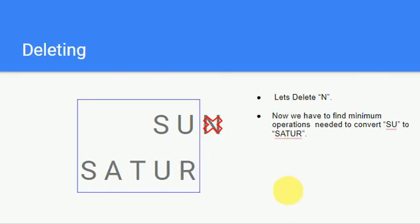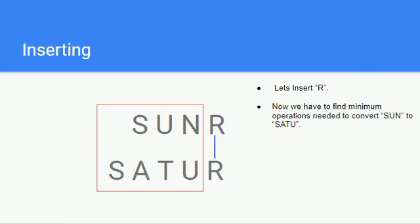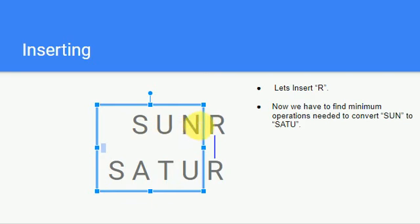If we delete N, we are left with the substring 'SU', so we need to find the minimum number of operations to convert 'SU' to 'SATUR'. For the insert operation, we insert R beside 'SUN'. Now R and R match, so we need to find the minimum operations to convert 'SUN' to 'SATU'.